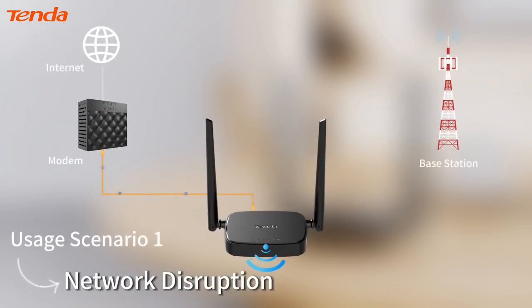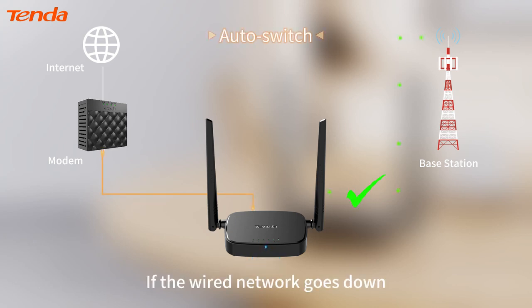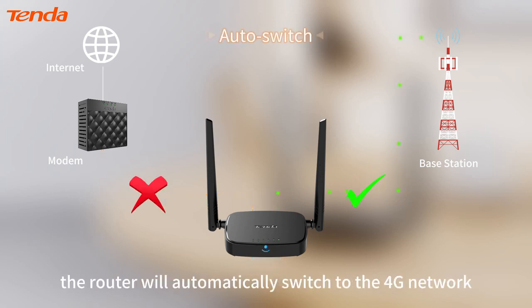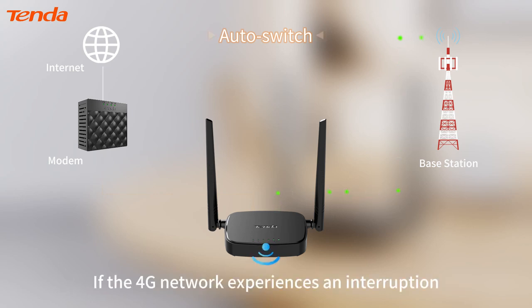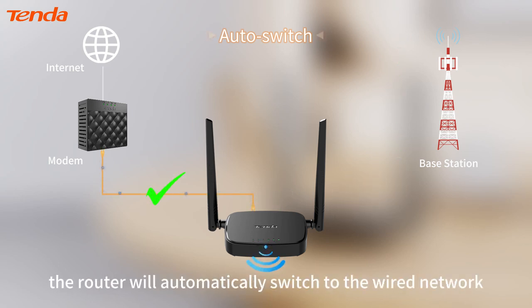Usage Scenario 1 – Network Disruption. If the wired network goes down, the router will automatically switch to the 4G network. If the 4G network experiences an interruption, the router will automatically switch to the wired network.